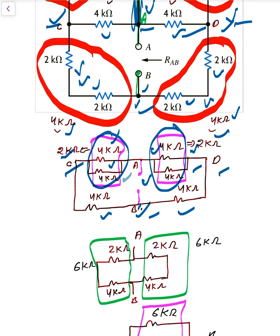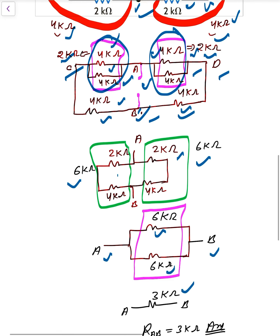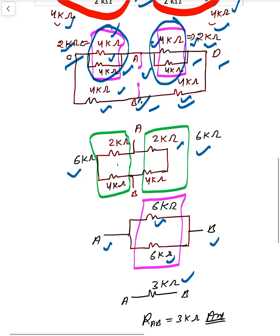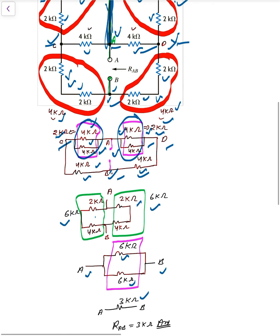Now, 2 kilo ohm and 4 kilo ohm are in series, giving 6 kilo ohm. Similarly, the other 2 kilo ohm and 4 kilo ohm are in series, giving 6 kilo ohm. Finally, from A to B we have 6 kilo ohm and 6 kilo ohm in parallel — the combination of these two is 3 kilo ohm, which is the correct answer.